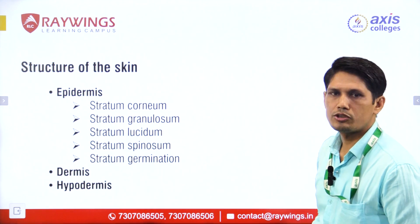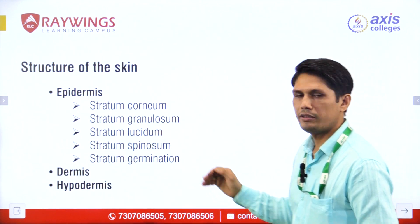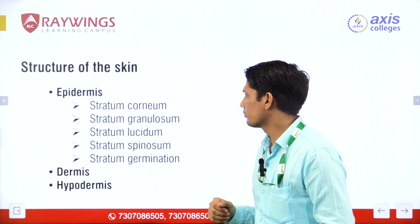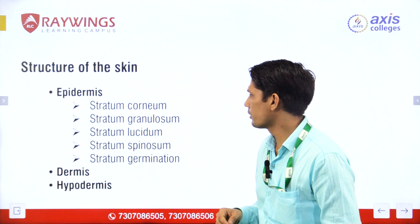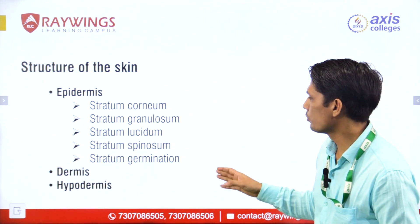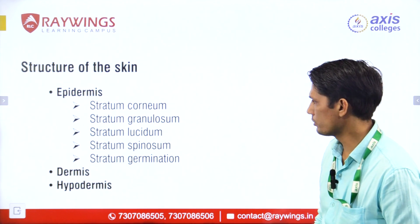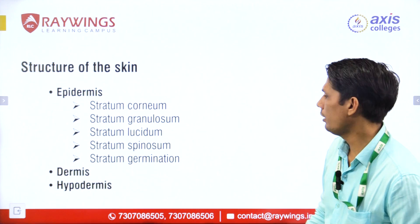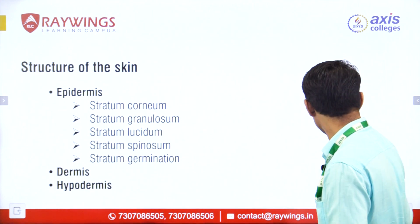Structure of the skin: the epidermis is divided into five layers — stratum corneum, stratum lucidum, stratum granulosum, stratum spinosum and stratum germinativum. Below the epidermis are the dermis and hypodermis.